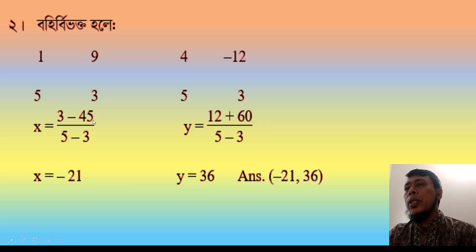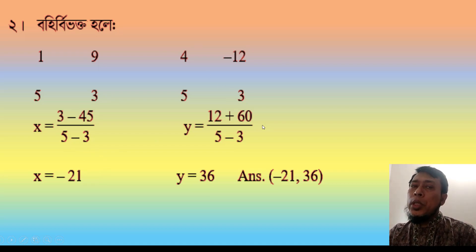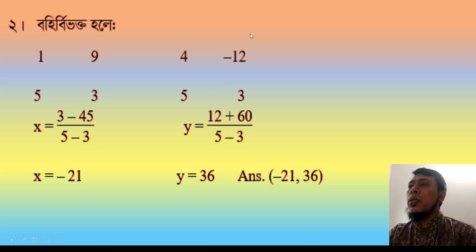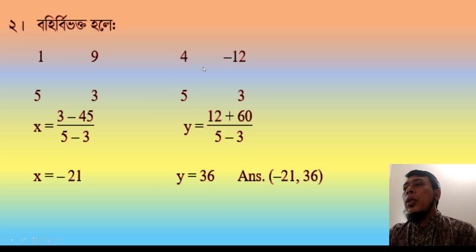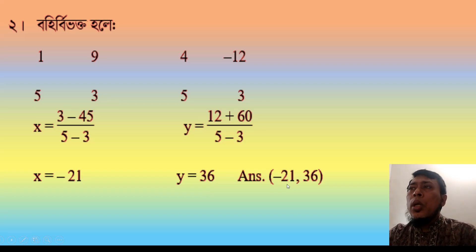3 minus 45 is 5 minus 3; 3 minus 45 is 42. 5 minus 3 is 2, minus 2 into 1. 4 into 3 is 3, minus 5 into minus 12. 4 into 3 minus 5 into minus 12; 5 into minus 12 is 60. 5 minus 3, calculation is 36 — this is the biggest factor. Minus 20 and minus 36; this is the biggest factor, 20 second factor.